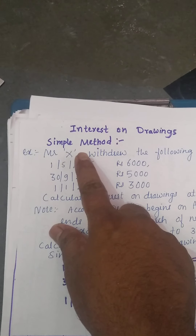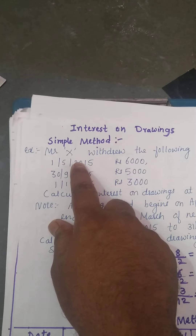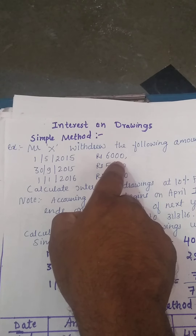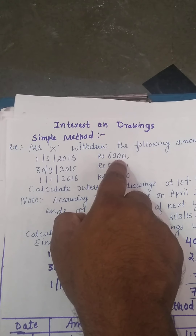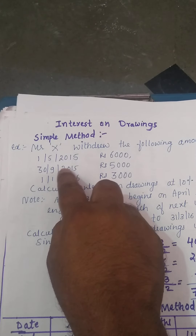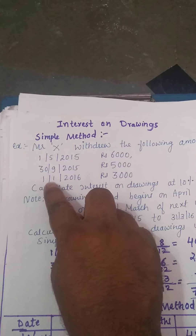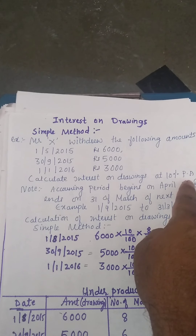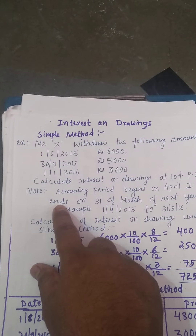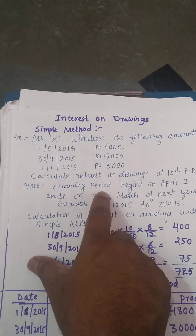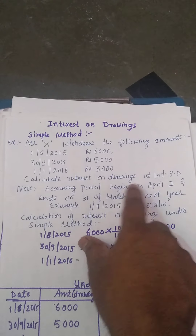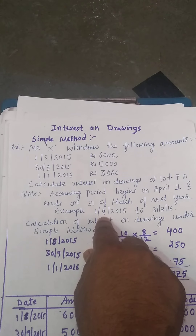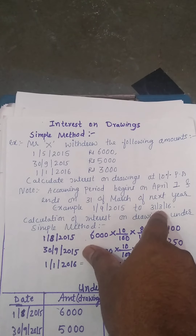Interest on drawings under the simple method. Let us take one example. Mr. X withdrew the following amounts: on 1/8/2015, Rs. 6000 was withdrawn; on 30/9/2015, Rs. 5000 was withdrawn. You are asked to calculate interest at 10% per annum. Note that the accounting period begins on April 1st and ends on 31st March of the next year — for example, if the accounting year begins on 1/4/2015, it will end on 31st March of the next year.